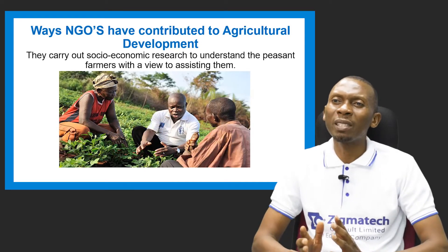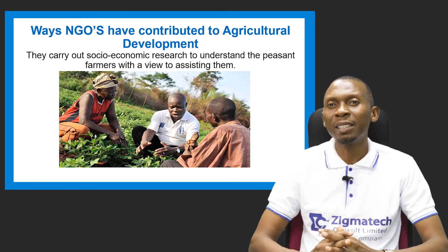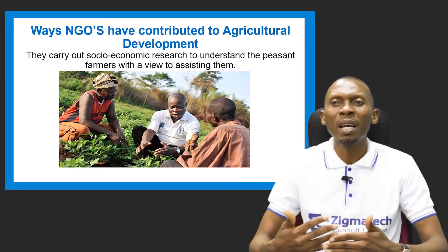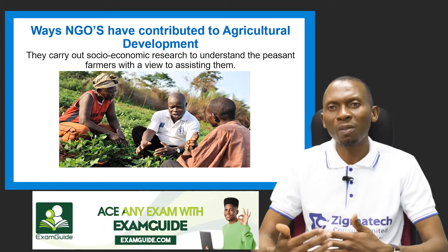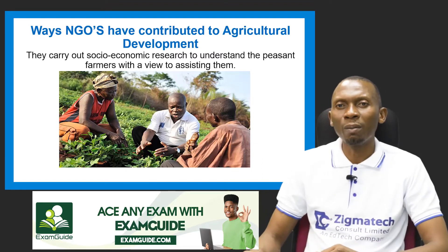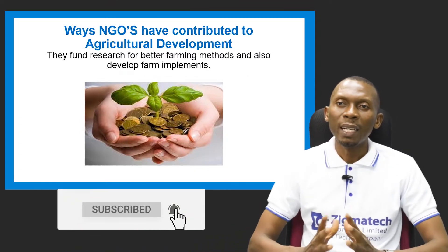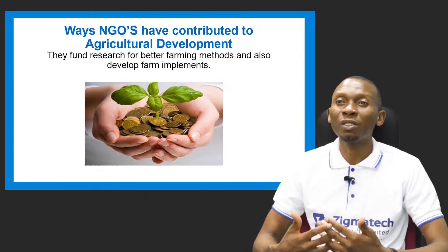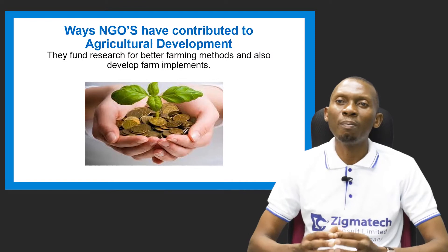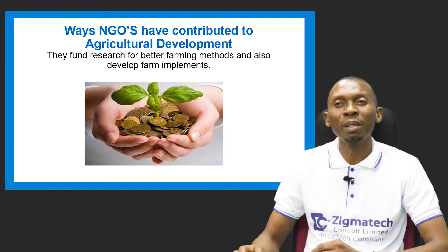They also help to carry out socio-economic research to understand the peasant or rural farmers, with a view to assisting them, because they face challenges that need to be solved. These NGOs come close to these farmers and try to understand them so they can help solve their challenges and problems. They also help to fund research for better farming methods.